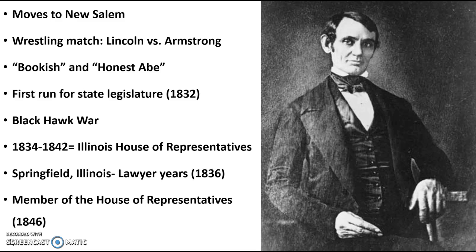At New Salem there was a bully named Armstrong. Lincoln always fought for the underdog and hated injustice. One day the two had a very public wrestling match — it was epic. Armstrong could beat anybody, so when Lincoln stood up to him toe to toe, the whole town watched. They went back and forth in a real brawl, with Lincoln looking like he was winning at times. In the end, Lincoln loses.